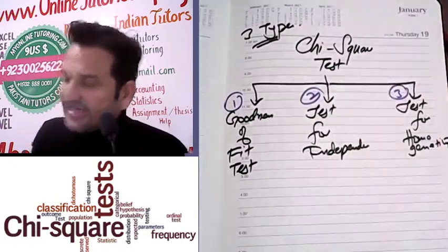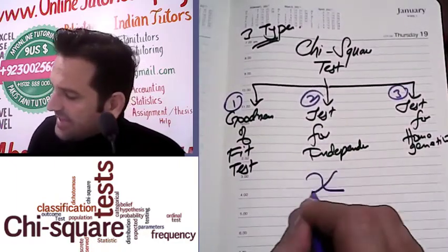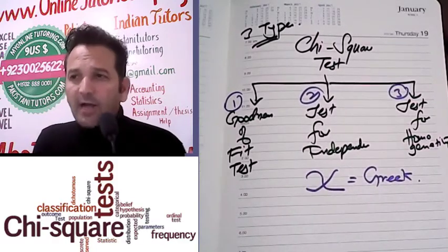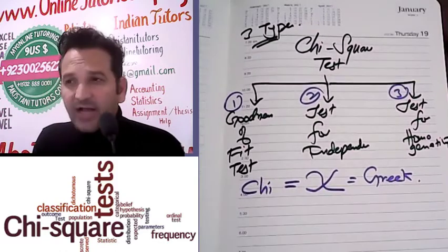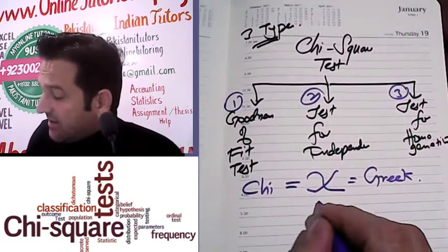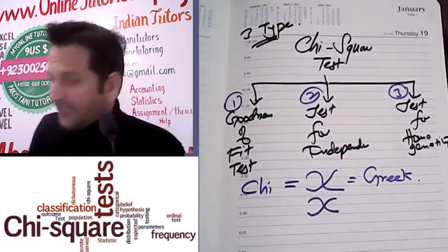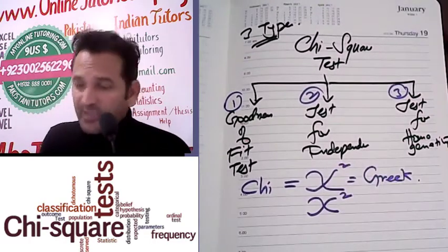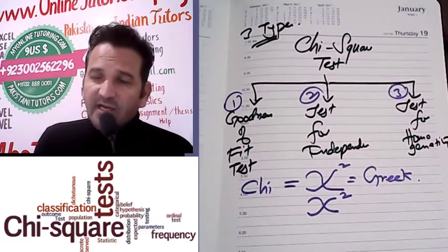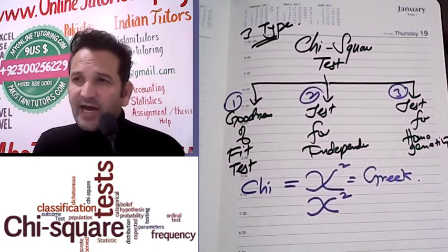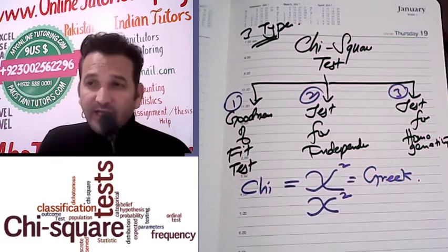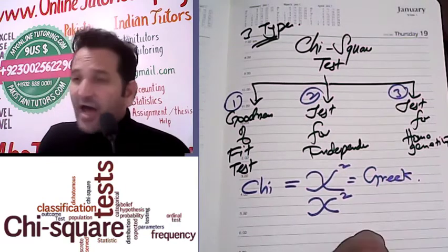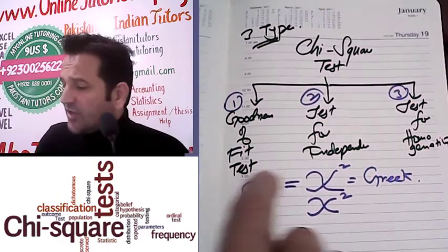Chi is a Greek letter. We put the square because of the variance which we use, because chi-square is mainly related to the variance and standard deviation of a population. So now we have three types of tests: goodness of fit test, test for independence, and test for homogeneity.